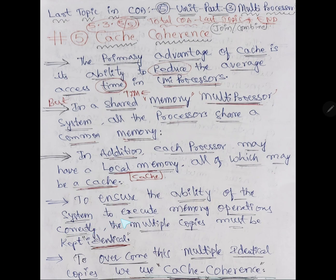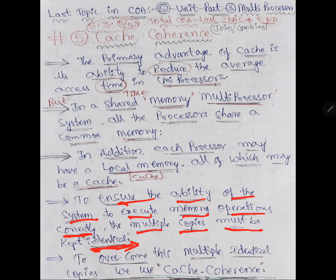To ensure the ability of the system to execute memory operations correctly, multiple copies in each cache need to be kept identical — the same data. To overcome this problem of multiple processors having different identical copies, we use a cache coherence scheme.